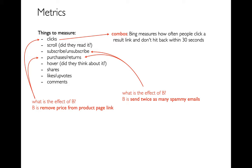Before you get something you like, like a customer buying something, usually there's a pipeline they go through. Maybe they go to your homepage, then click on a product you're advertising, then go to checkout, then complete checkout. They might fall off at different points. For example, if I remove the price from the product page, maybe they click on it and later find out they don't want it. If I put the price up front, fewer people will click, but since they're going in informed, they'll probably continue all the way through the pipeline.